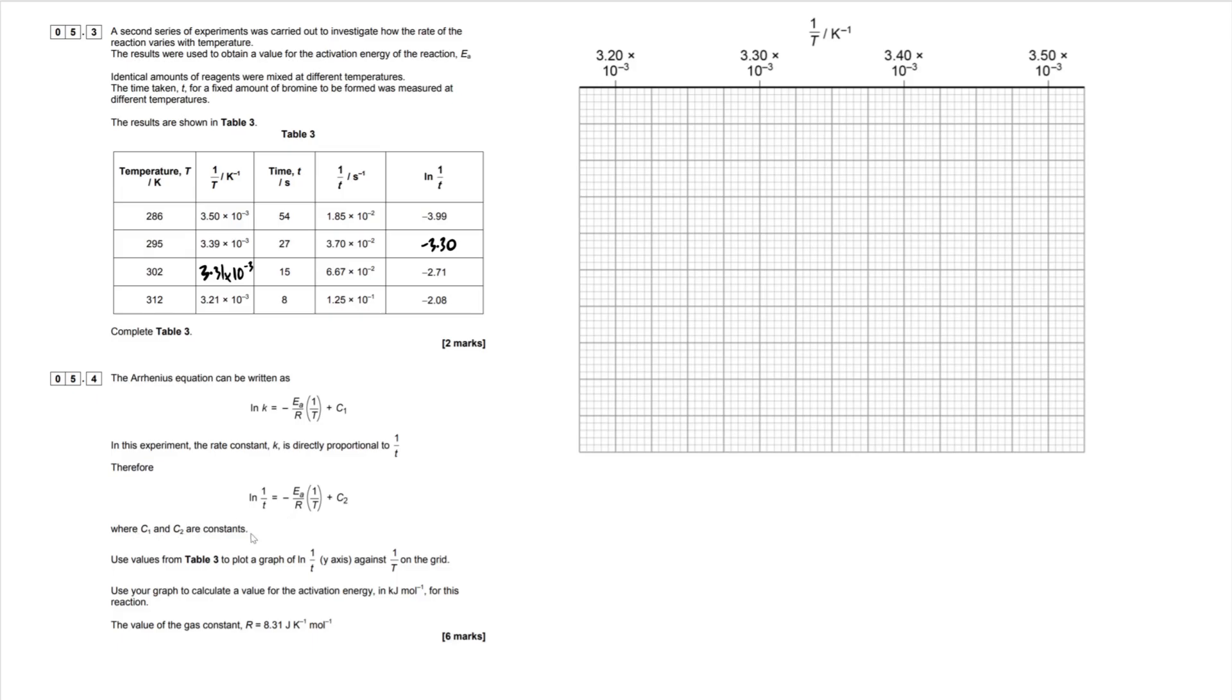Where C1 and C2 are constants. Use values from table 3 to plot a graph of LN 1 over T against 1 over T on the grid. Use your graph to calculate a value for the activation energy in kilojoules per mole. Activation energy for this reaction, the value of the gas constant R is this. So for those of you that don't do maths, you may look at this and think, oh no, like you might get super intimidated, not have a clue what's going on, panic setting in. Don't panic.